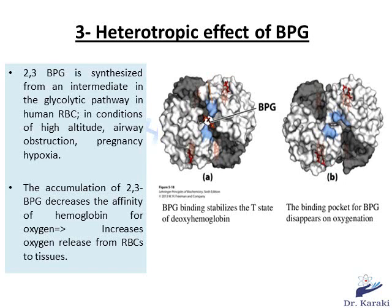Now let's talk about the importance of BPG and when it is synthesized. Red blood cells generate more BPG to help prevent tissue hypoxia in conditions of low tissue oxygen concentration, such as at high altitude, in cases of airway obstruction, and in pregnancy hypoxia. The accumulation of 2,3-bisphosphoglycerate decreases the affinity of hemoglobin for oxygen when hemoglobin is in the T state, and this mechanism increases the oxygen released from red blood cells to tissues.